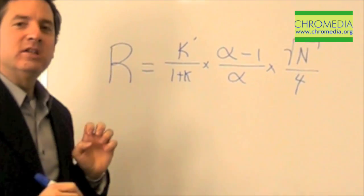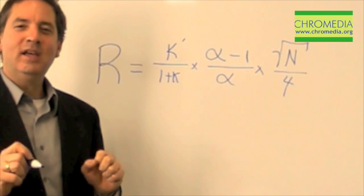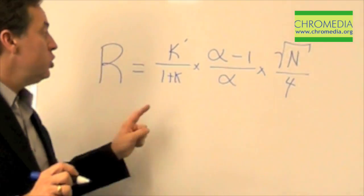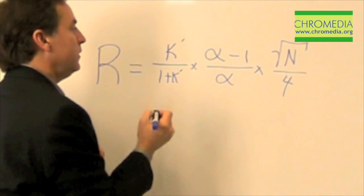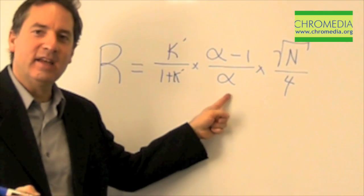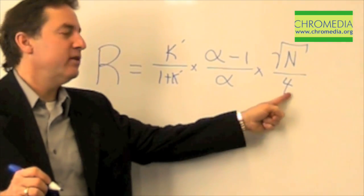So what this equation tells us is, in order to get resolution, in order to separate any two peaks, you must have the correct capacity factor, you must have the correct selectivity, and you must have the correct efficiency.